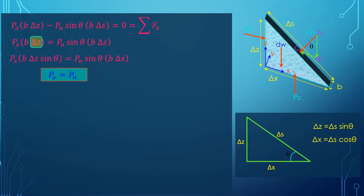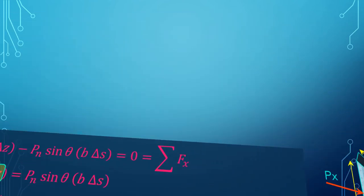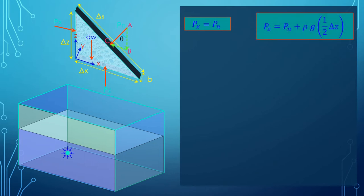Let's see forces in z direction. Here delta x can be replaced by delta s cos theta. From this we get pz equal to pn plus a component due to the weight of the fluid element. Now for the fluid element to be a point, delta z must tend to zero. From this we get pz equal to pn.